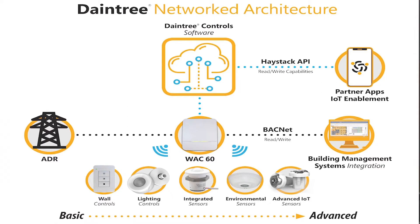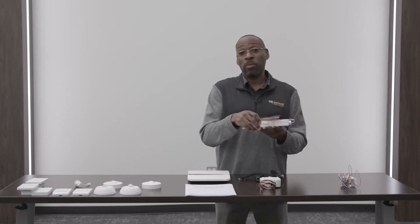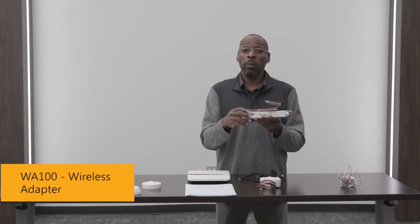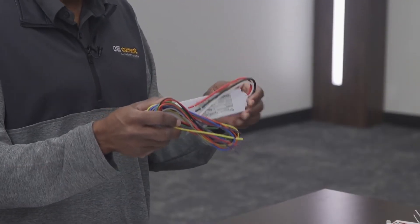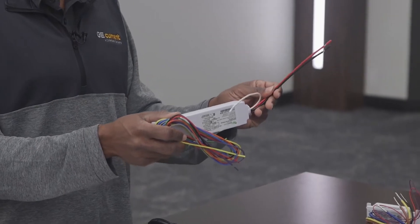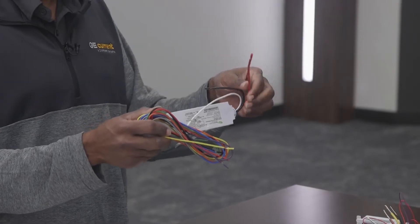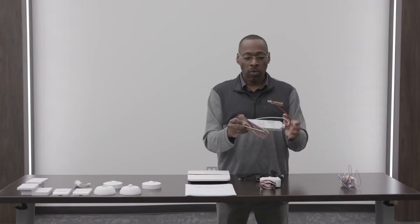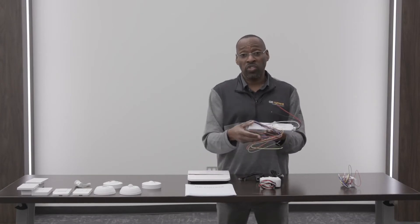Now I'm going to go through some of the wired devices we have within the system. This is where it really gets fun for a lot of the installers, because there are a lot of different dip switches and different things that may need to be set. This is our WA100 device — it is a lighting relay that turns lights on and off. You have to power up the device, and then there's a switch leg that goes out to different lights that are in sequence with the system to turn them on and off. This device does have a radio inside of it that again talks back to the WAC so we can control it.